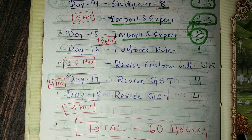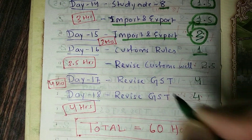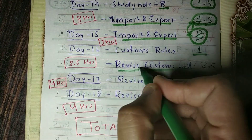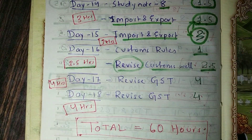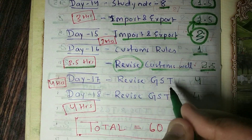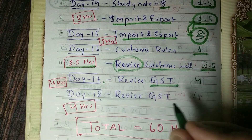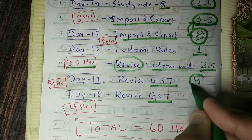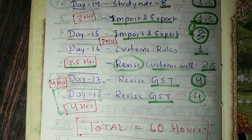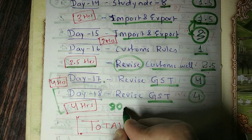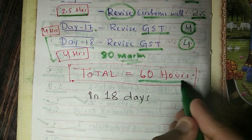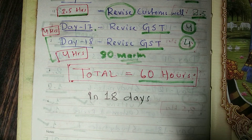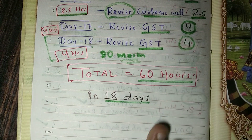Day 16 is the last chapter — custom rules, including MCQs — and that will take 2.5 hours, making day 16 a total of 3.5 hours. On days 17 and 18, you will revise GST for 4 hours total. The entire paper number 11 plan covers 60 hours in 18 days.